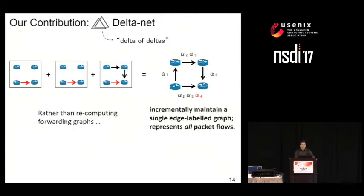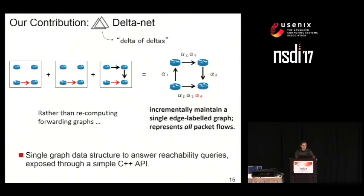Notice, however — highlighted by these dashed blobs — the forwarding behavior of the data plane without the red rule. This highlighted area illustrates that there can be significant overlap between previously and currently constructed forwarding graphs. This leads to inefficiencies that can be prohibitively expensive when real-time constraints matter. One of our main contributions is to compress these forwarding graphs and incrementally maintain a single edge-labeled graph representing the flows of all packets in the entire network.